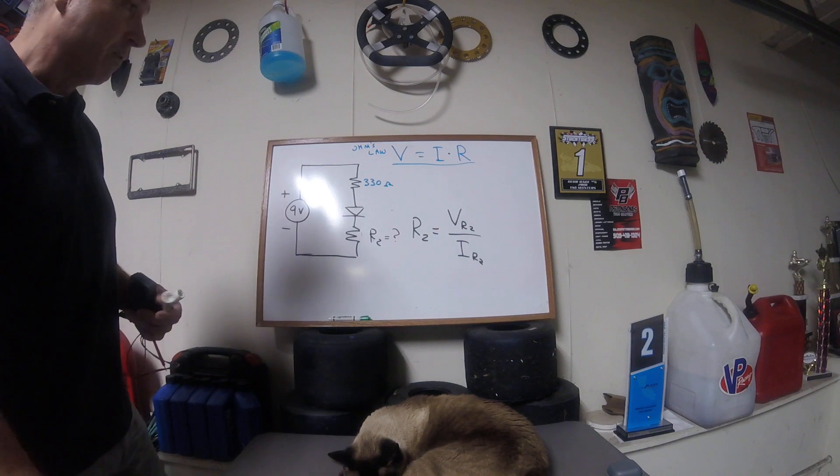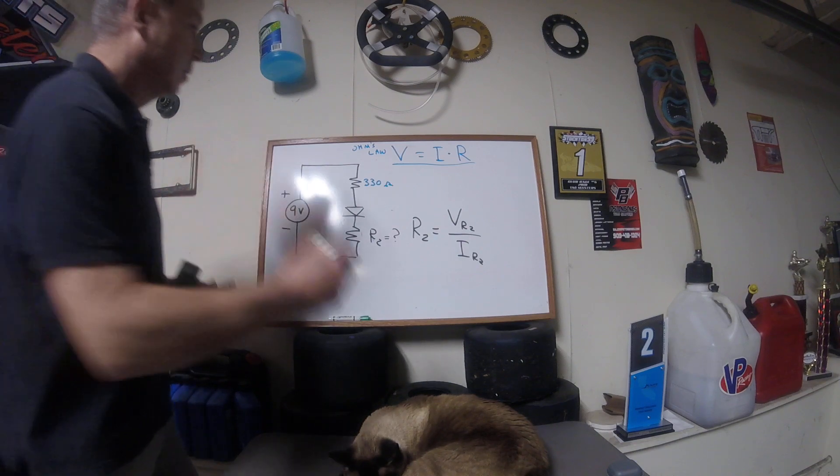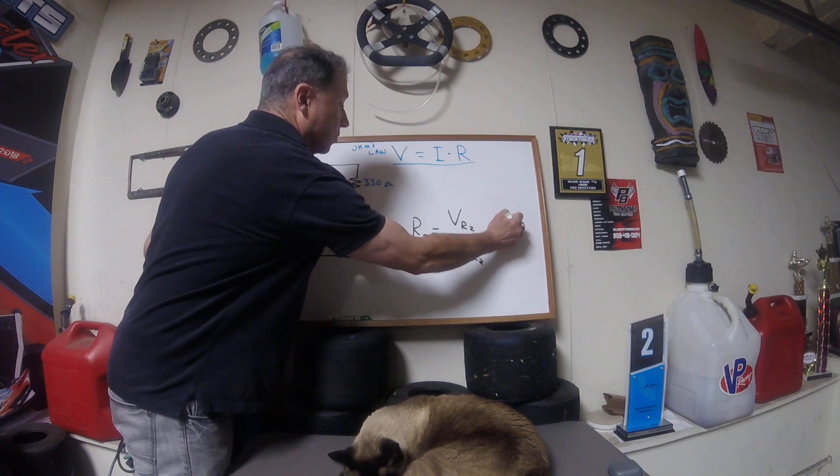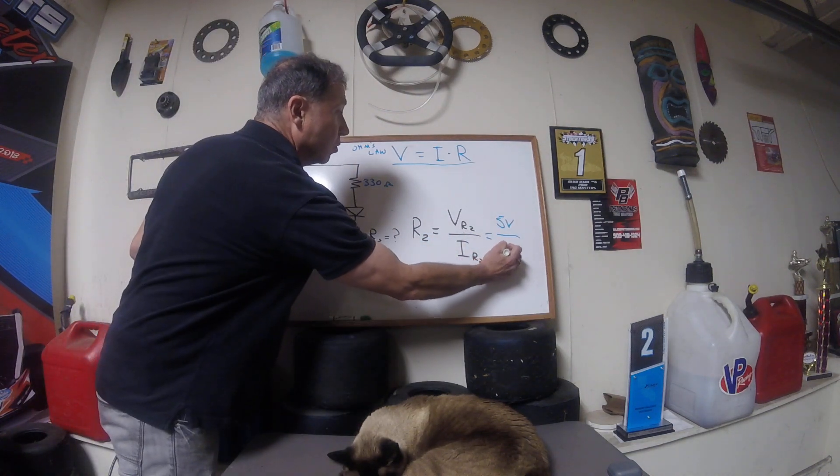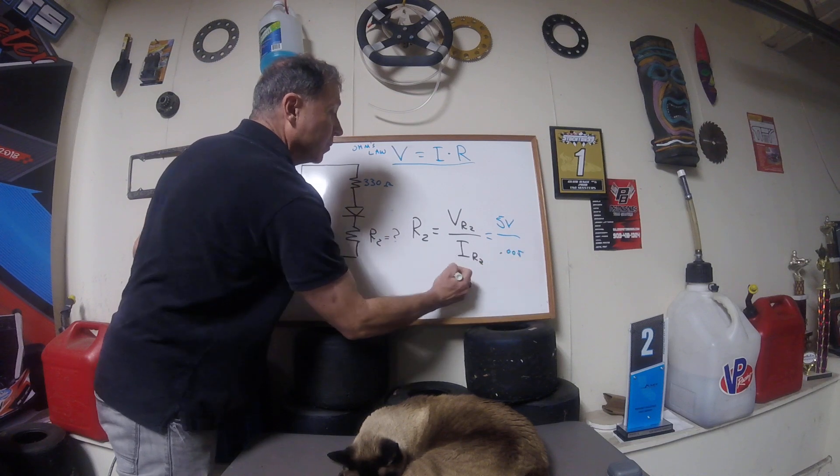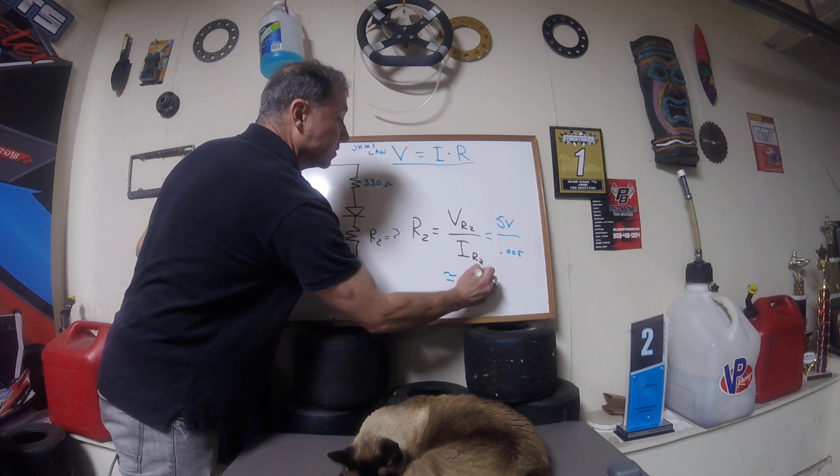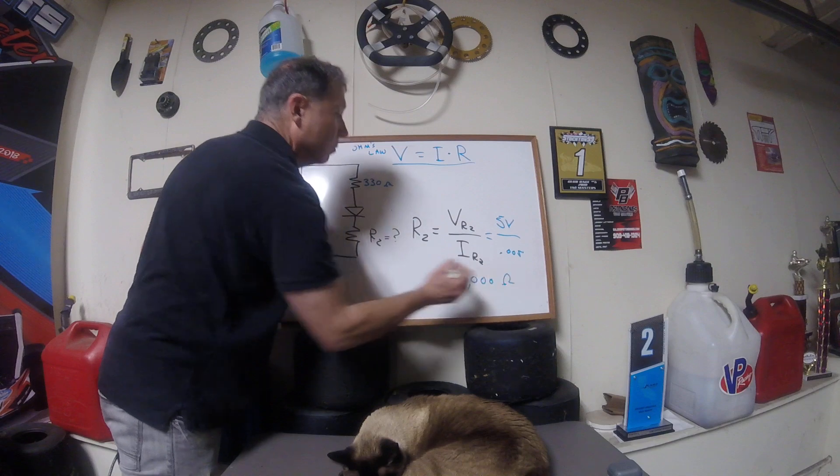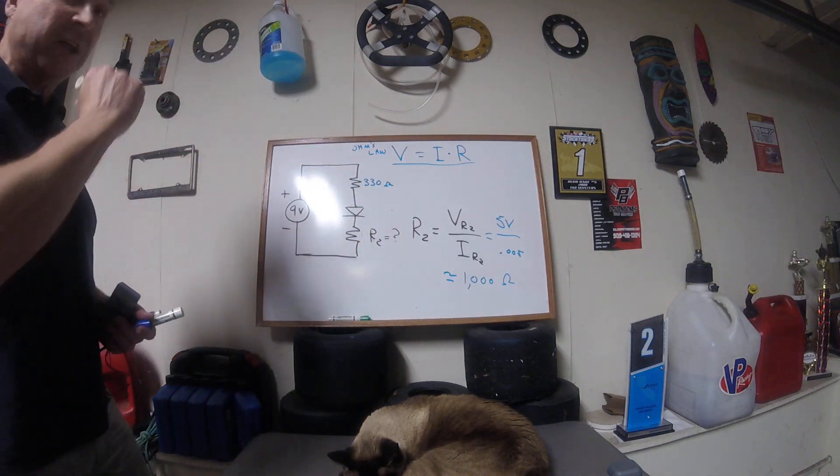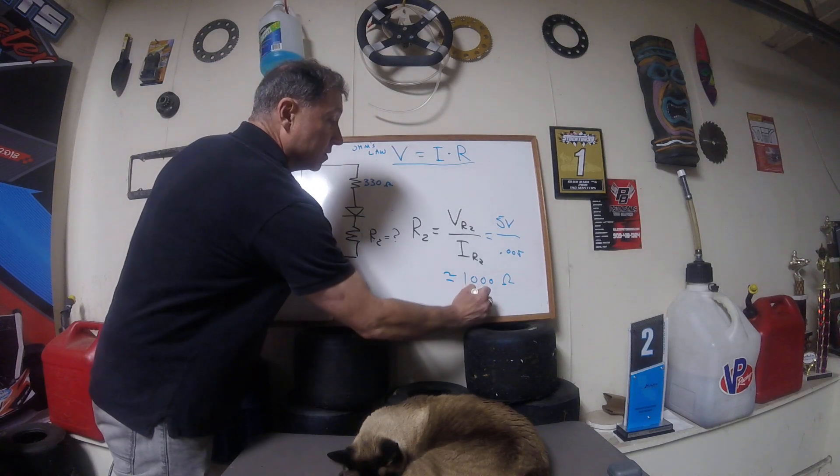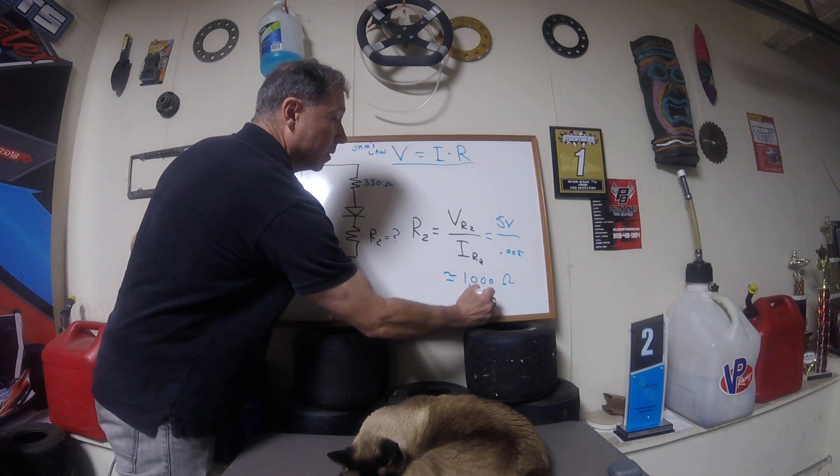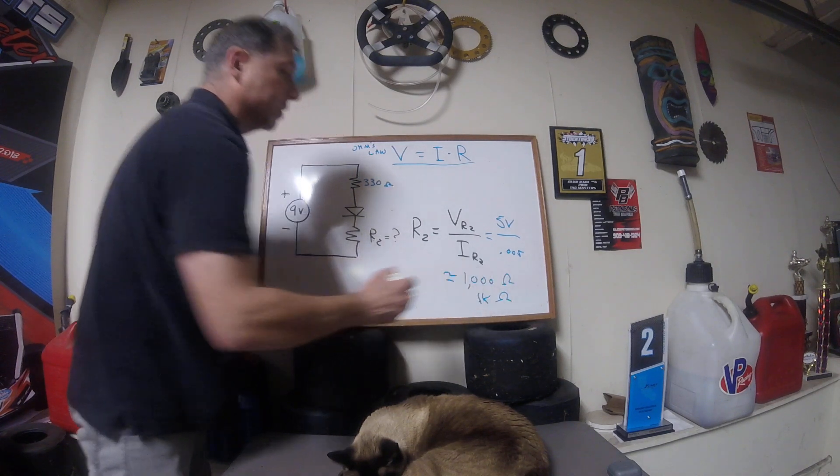Okay, let's put in values. We said 5 volts was measured across VR2. We said 5 milliamps here, 0.005. Once we do that, we get about 1,000 ohms for R2. Some unknown resistor of 1,000 ohms, which is 1,000 ohms.